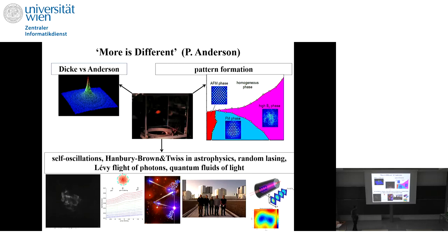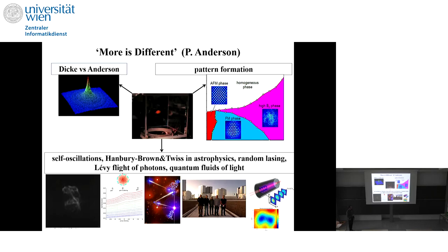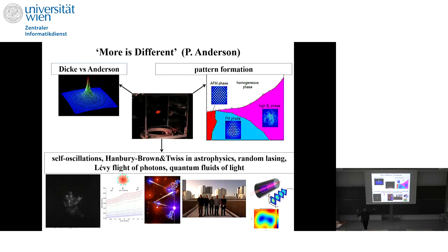I will also discuss another topic connected to random lasing, which has to do with the motion of the atoms and the internal degrees of freedom — how the atoms jump up and down in the energy spectrum. Maybe I will speak about Lévy flights. The new topic is reaching out to astrophysics: we have revived intensity correlations developed by Hanbury Brown and Twiss, and now hope to do new science with intensity correlations in optical telescopes across the world.